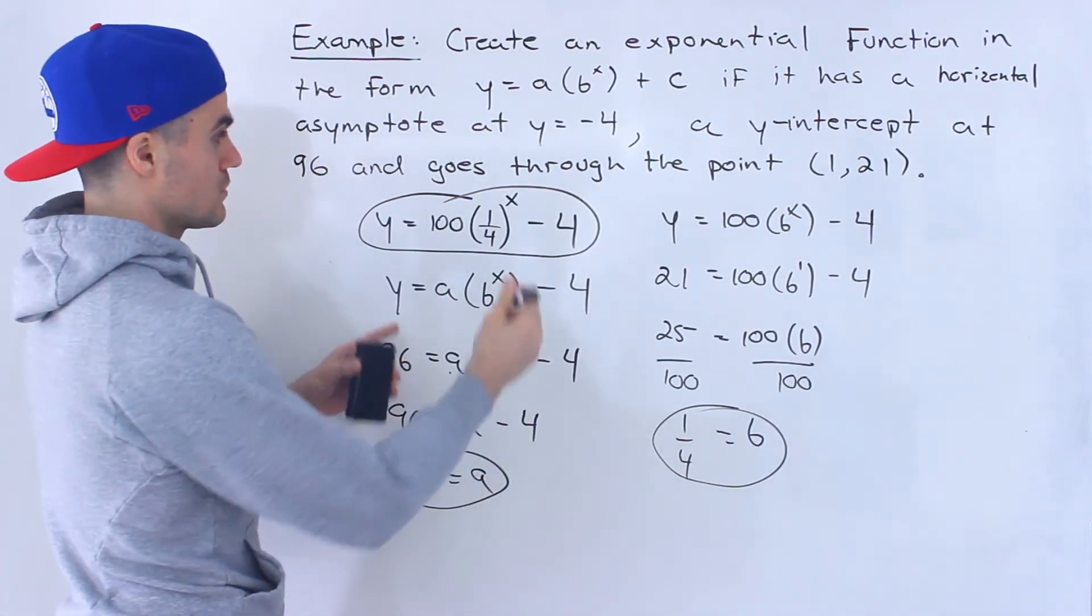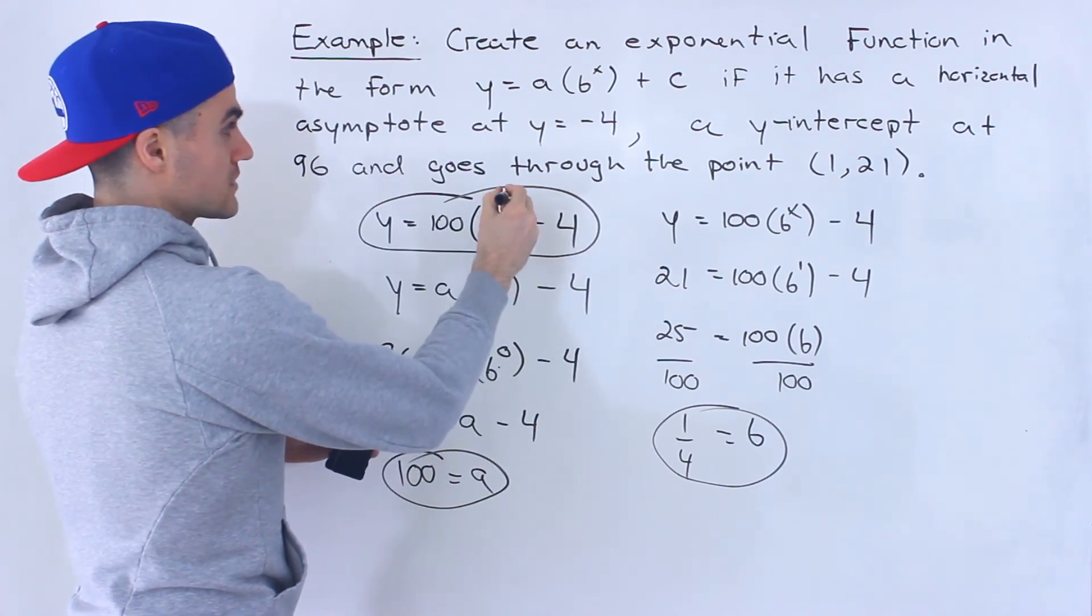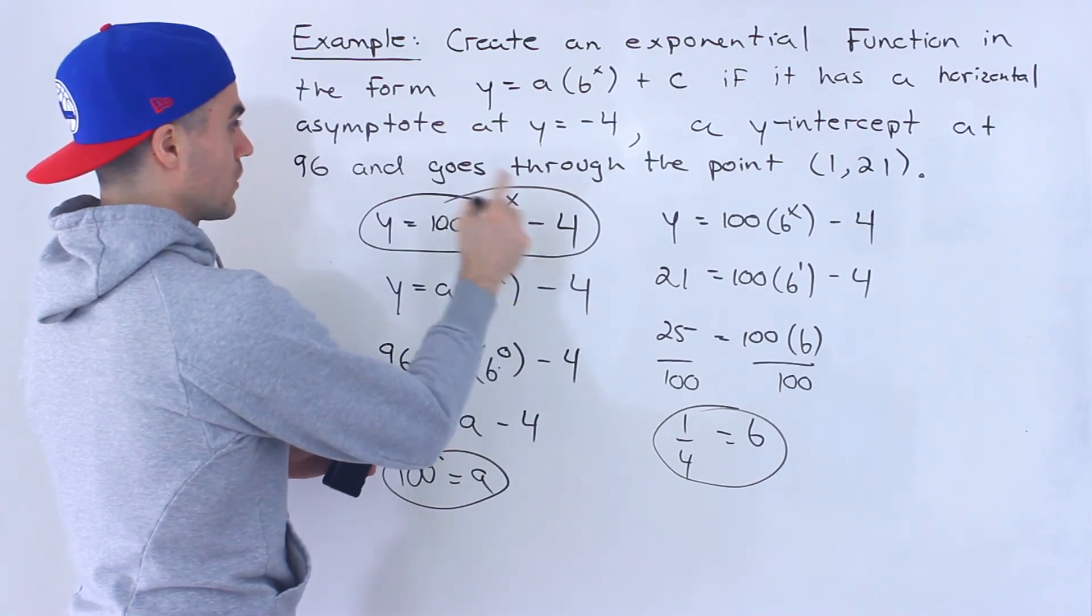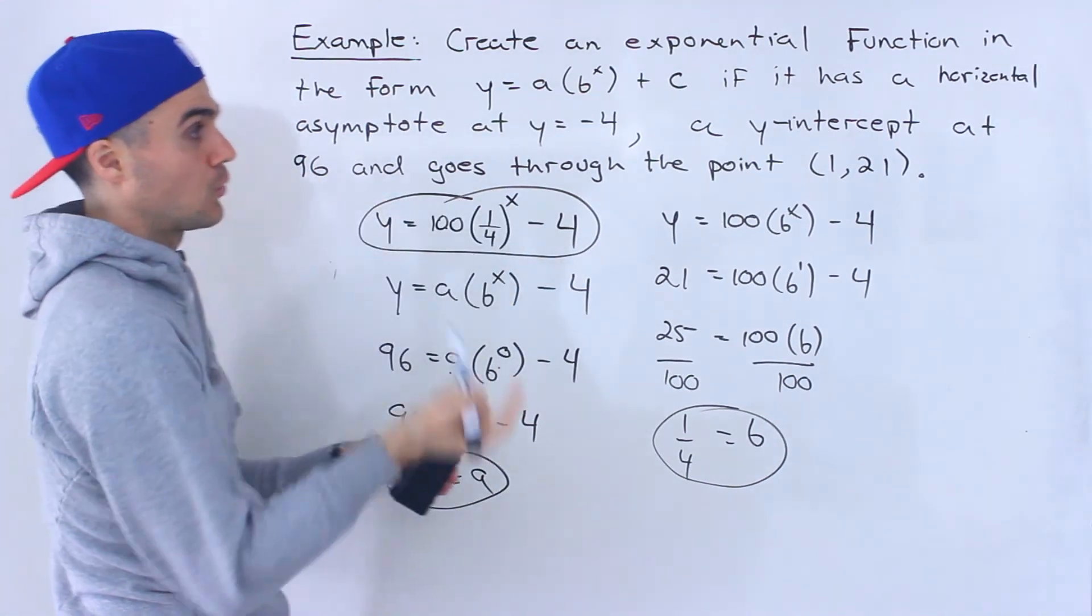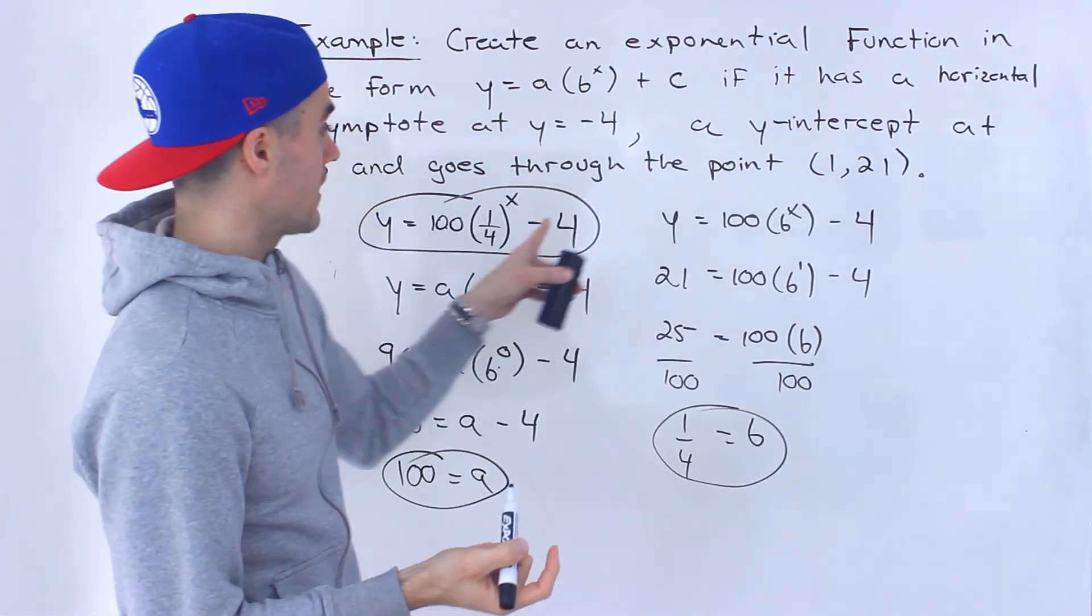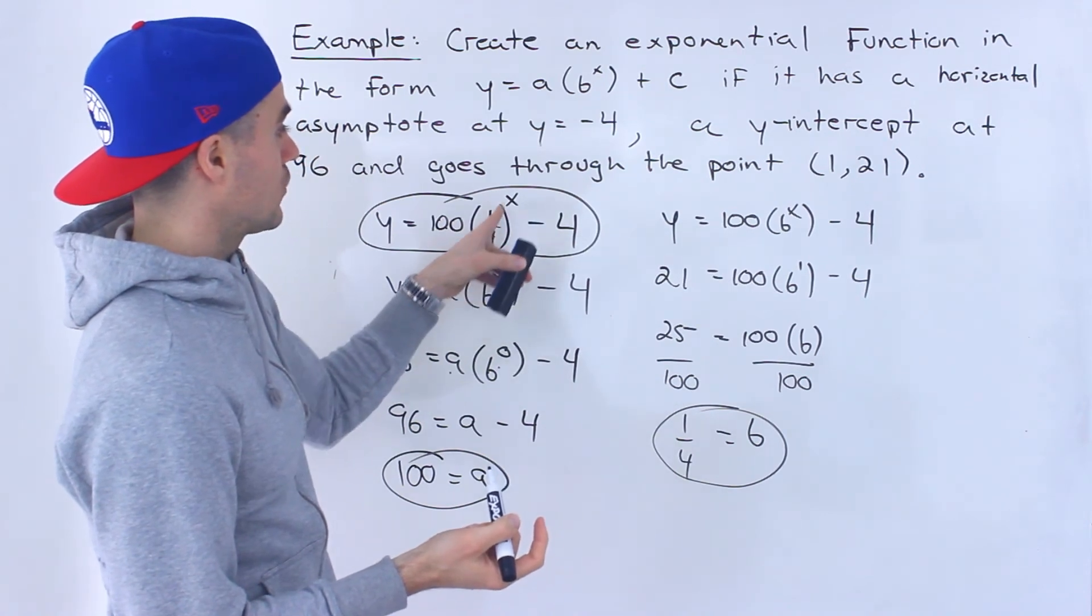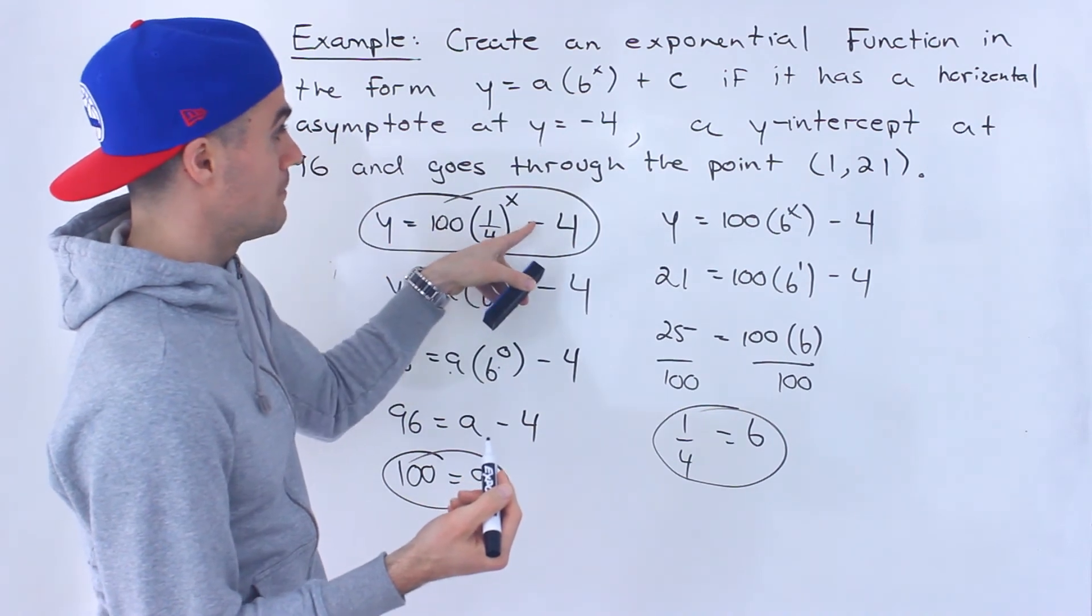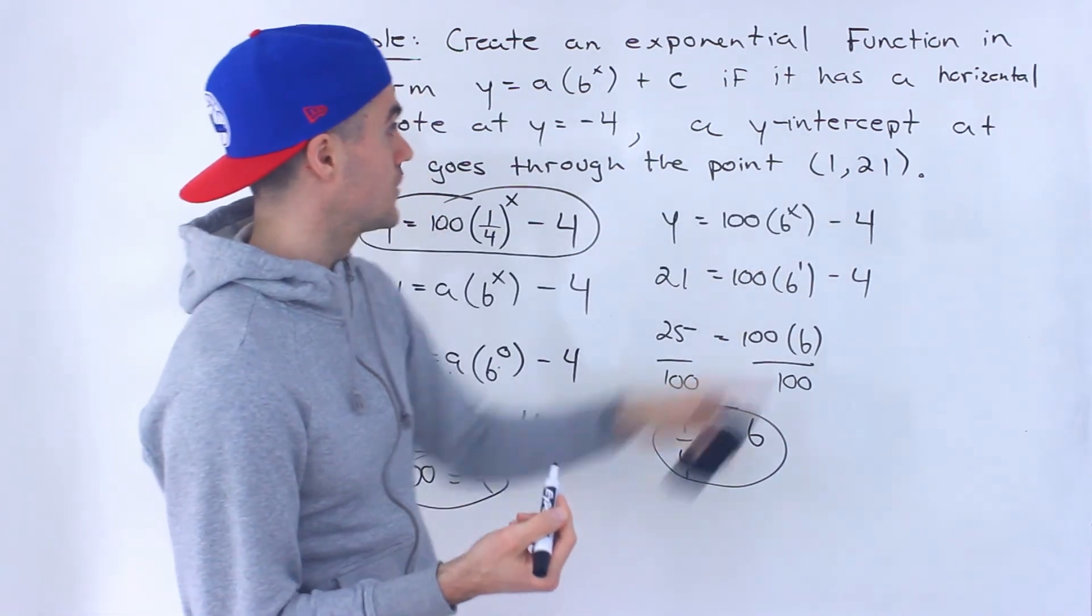And you could check it. If we plug in 0 for x for the y-intercept, notice this would go to 1. 100 times 1 is 100 minus 4 is 96. If we plug in 1 for x, we'll have 1 over 4 to the power of 1, which is 1 over 4, times 100, which is 25, minus 4 gives us 21.